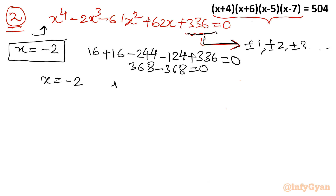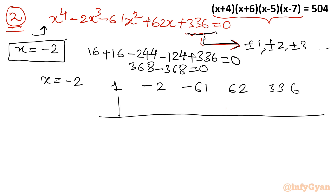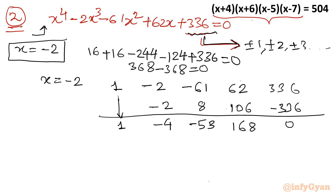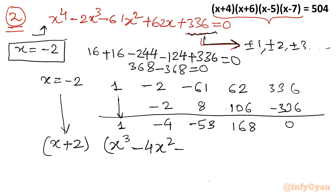Applying synthetic division with x = -2 and coefficients 1, -2, -61, 62, 336: the process gives a remainder of 0, confirming the root. The equation factors into (x+2)(x³-4x²-53x+168) = 0.